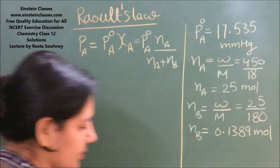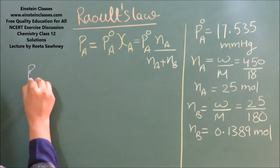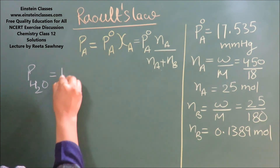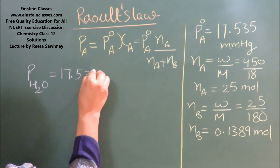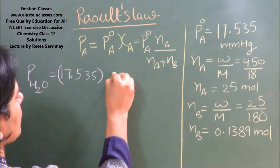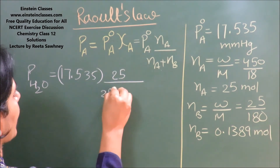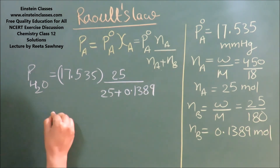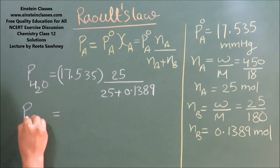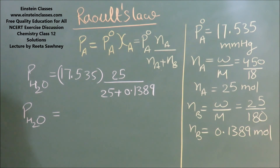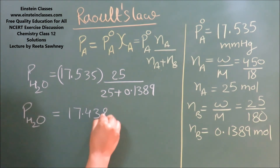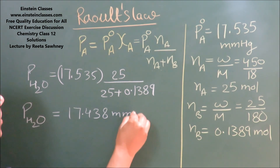Now we can simply place the values into the formula. The partial pressure of water, PA, equals the vapor pressure of pure water — 17.535 — multiplied by the mole fraction: 25 divided by (25 + 0.1389). By simplifying, we can find out the partial pressure of water, which is the vapor pressure of water in the presence of the non-volatile solute glucose. It comes out to be 17.438 mmHg.